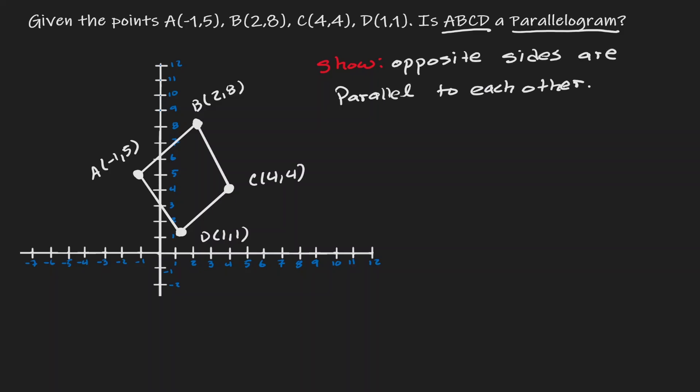Now, how can we show that lines are parallel to each other? Well, we know that parallel lines have the same slope.